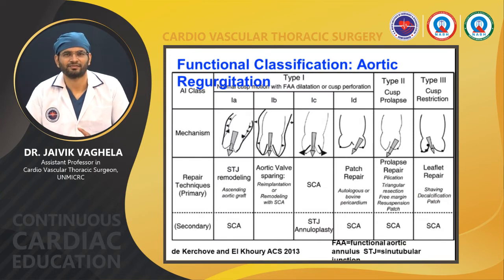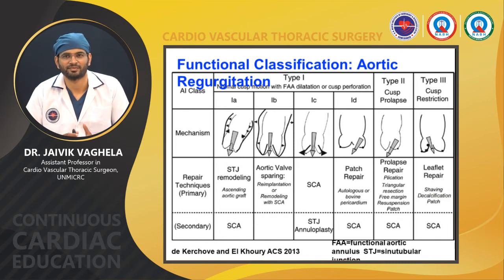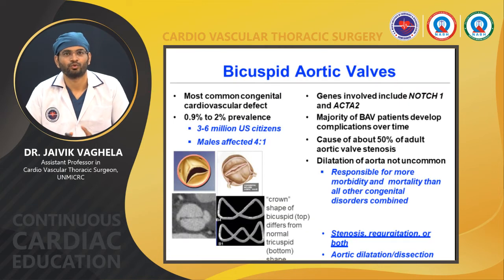The functional classification of aortic insufficiency: Type 1 is further divided into Type 1a, 1b, 1c, and 1d; then there is Type 2 and Type 3. All types have different morphology and are associated with varying degrees of aortic valve regurgitation. Each type is treated differently surgically — sometimes requiring only annuloplasty, and if there is cusp perforation it may be repaired directly or with a pericardial patch.